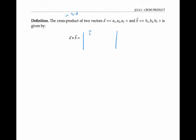We put the vectors i, j, and k at the top, and then we put the components of vector a and the components of vector b in that order. Then we compute the determinant as we would with any matrix. One way of doing this is by expanding along the top row.